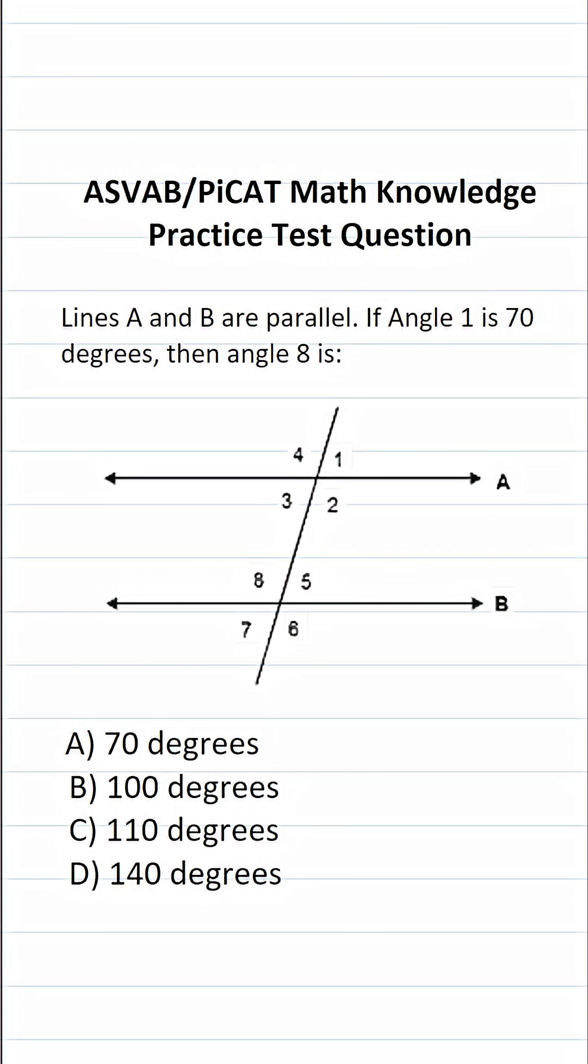This math knowledge practice test question for the ASVAB and PiCAT says lines A and B are parallel. If angle 1 is 70 degrees, then angle 8 is.